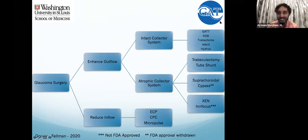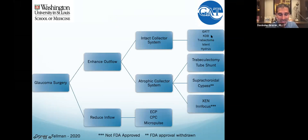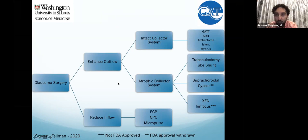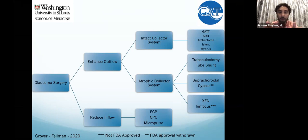This is just a surgical algorithm. I tell my patients we're basically fancy plumbers. We are creating a new drainage system — specifically a tube shunt. Can you go over how you might select going to a tube shunt instead of something else? Is there a certain patient profile where you'd say, 'I think I'm going directly to a tube'?